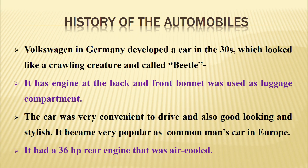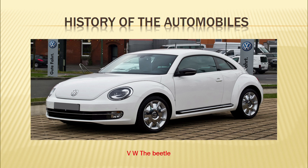Volkswagen in Germany developed a car in the 1930s which looked like a crawling creature and was called the Beetle. It had an engine at the back, and the front bonnet was used as a luggage compartment. The car was very convenient, good-looking, and stylish, becoming a popular common man's car in Europe. It had a 36 HP rear engine that was air-cooled.